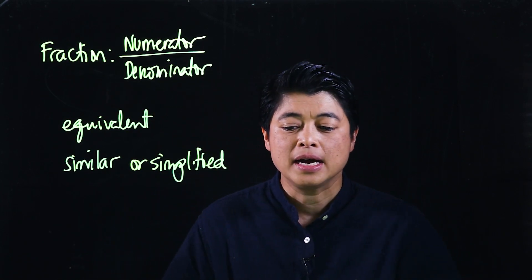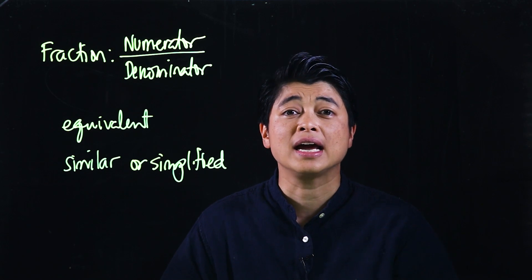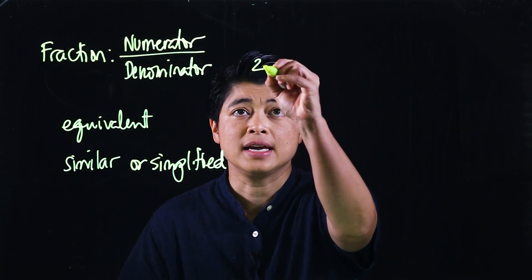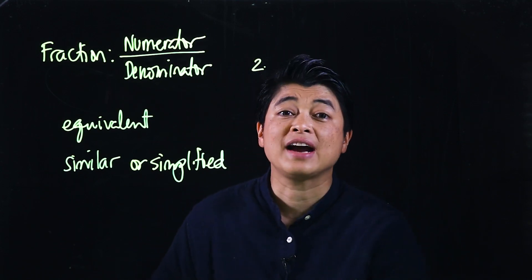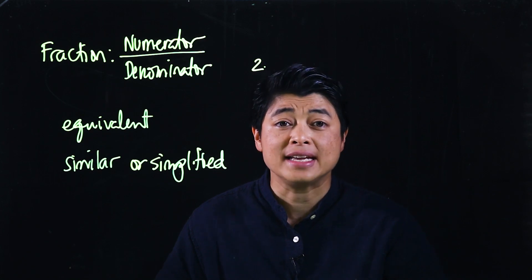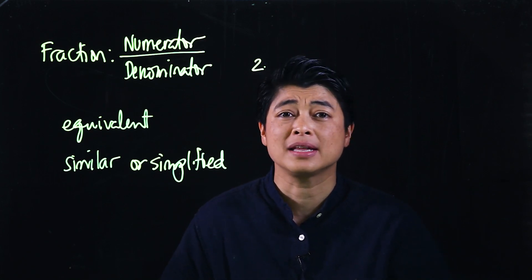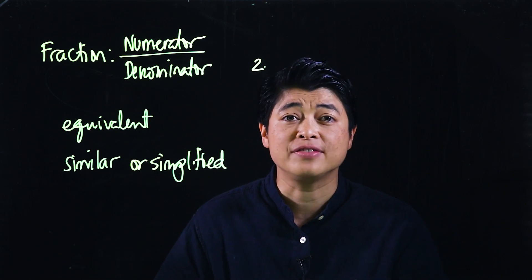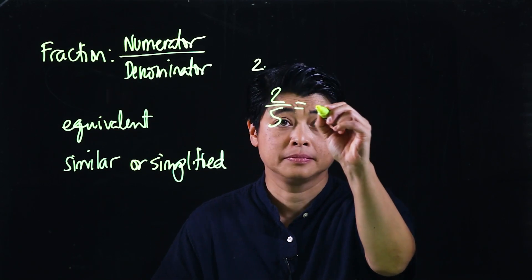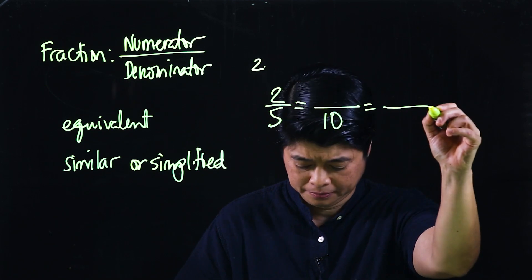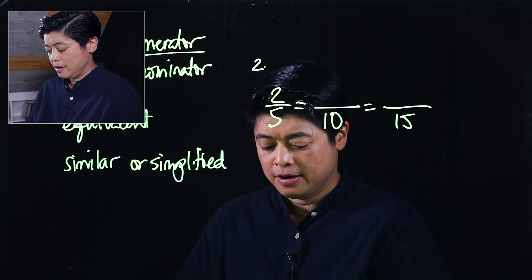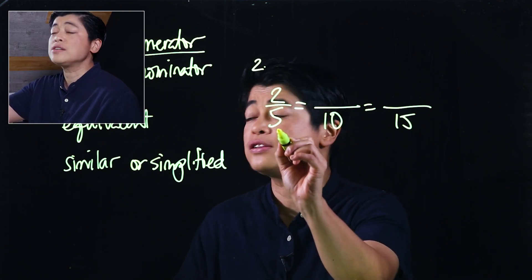We will start with problems taken from two different pages. The first is from page 58. Problem number two says: find the equivalent fractions. There are visual aids in this problem, but parents, please remember that not all problems will have visual aids. It says: find the equivalent fractions.